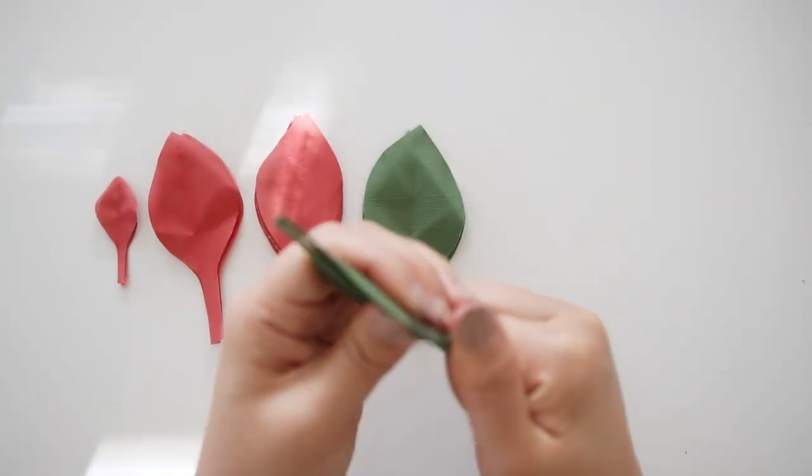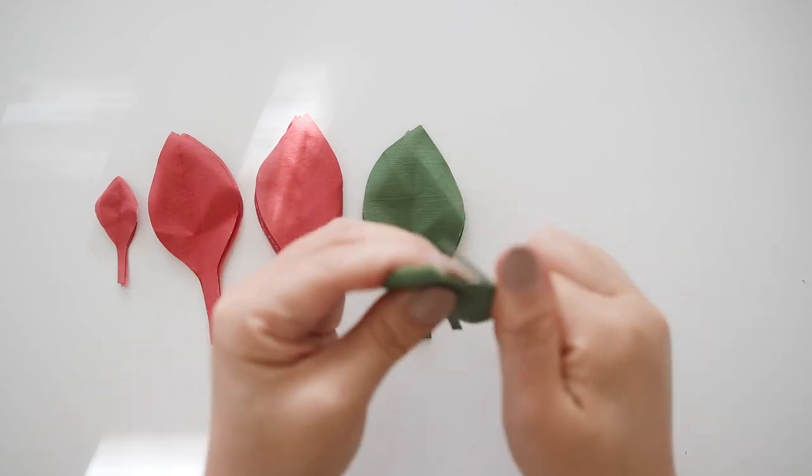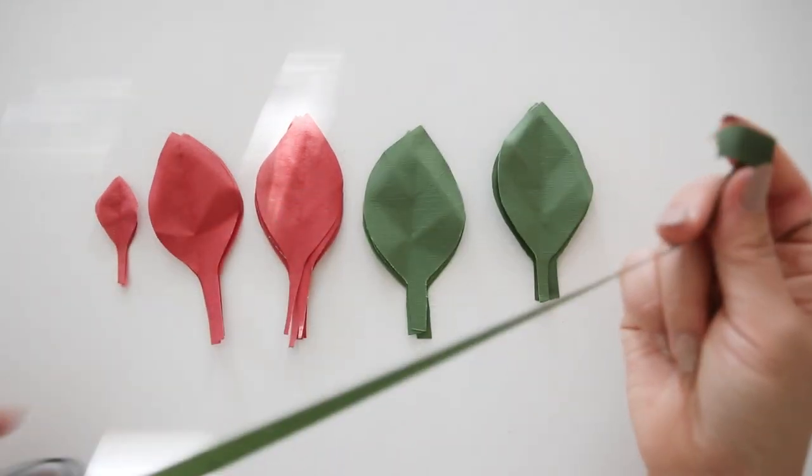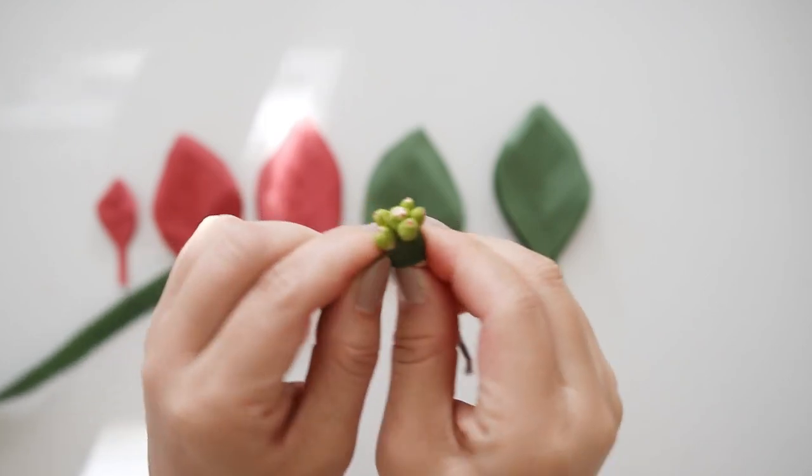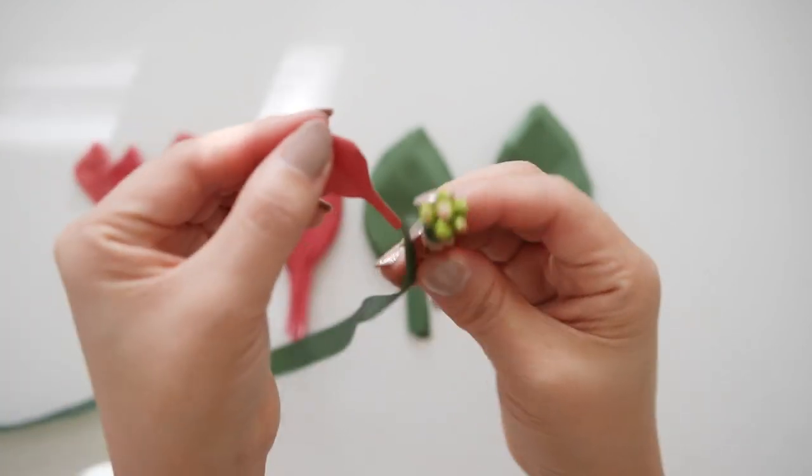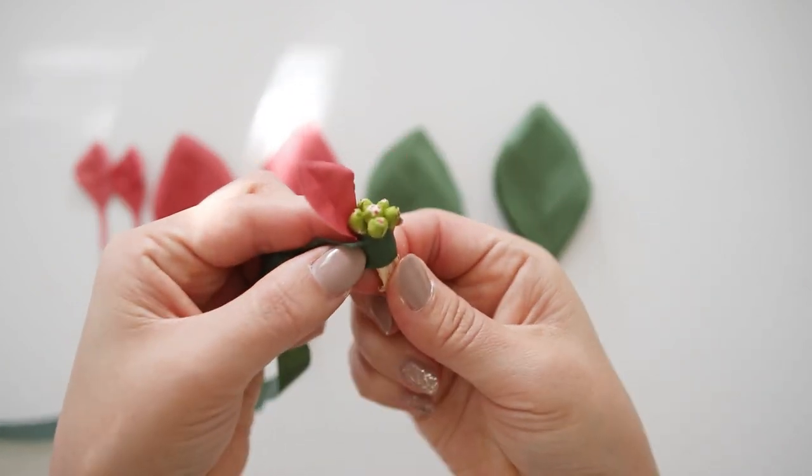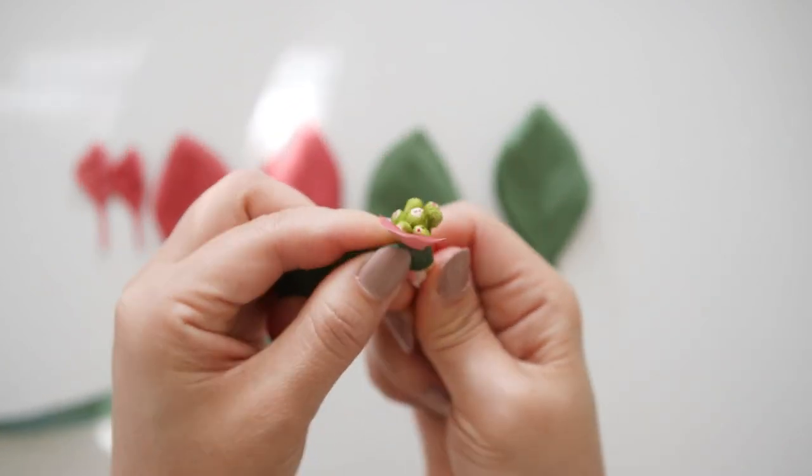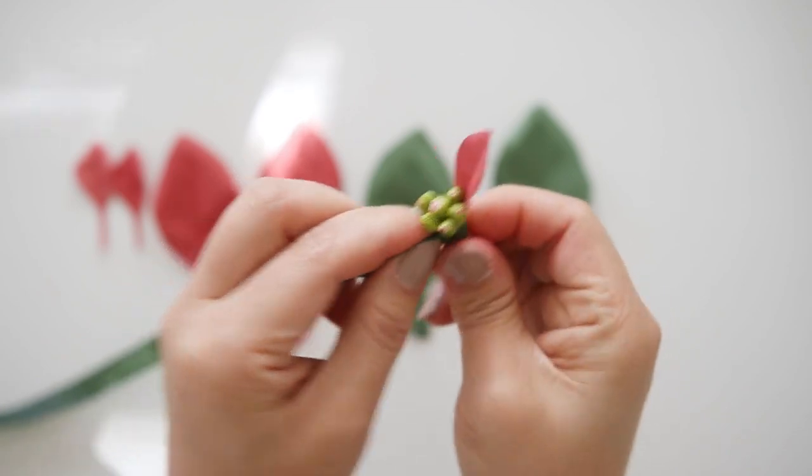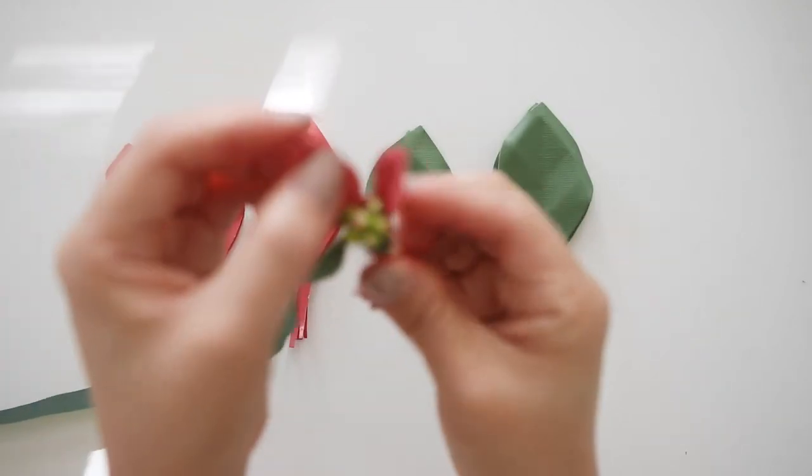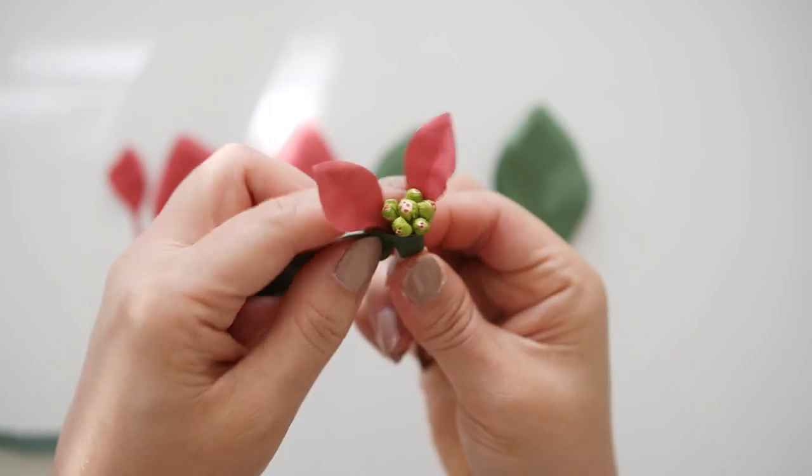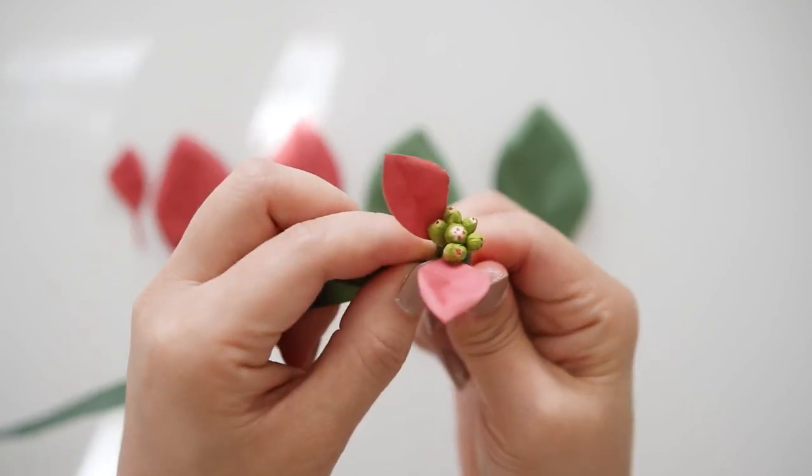Once you have all the pieces shaped, grab your dark green floral tape and first floral tape the stem with the tissue pieces, covering up most of the yellow ends right below the green area. Then take piece by piece starting from the smallest and floral taping the stems onto the floral wire. I like to work in threes, basically making a triangle with the angles.